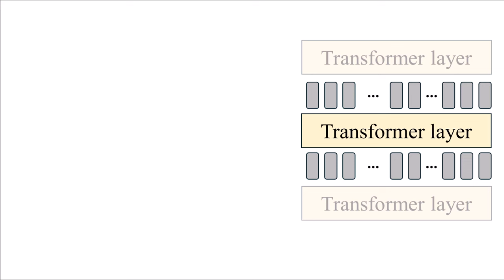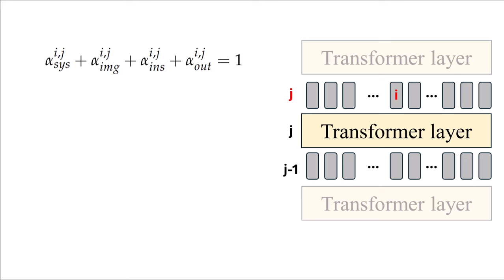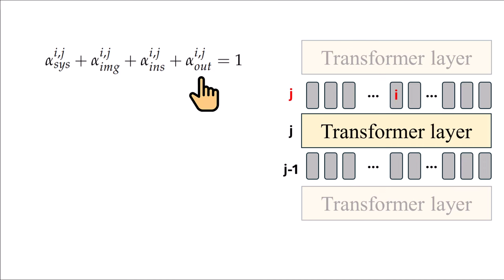For a specific transformer layer J, it receives tokens from transformer layer J-1 and constructs tokens for layer J. For a specific token I at layer J, we compute four different attention scores which sum to one: the first is for system prompt tokens, indicating how much we attend to system prompt tokens in previous layers to construct this token; similarly for image tokens, instruction tokens, and output tokens.